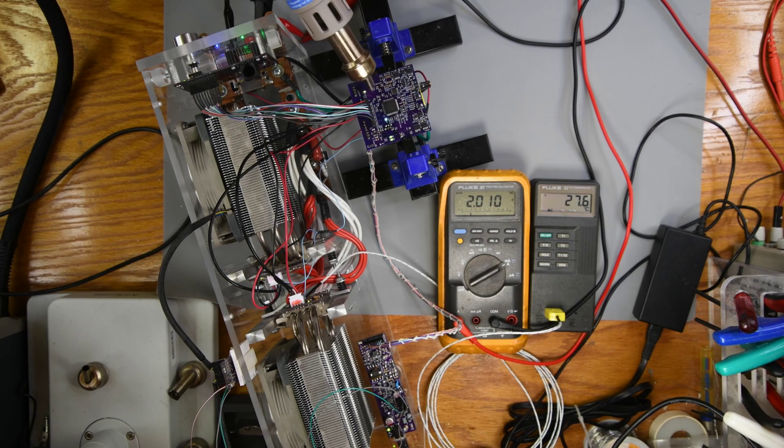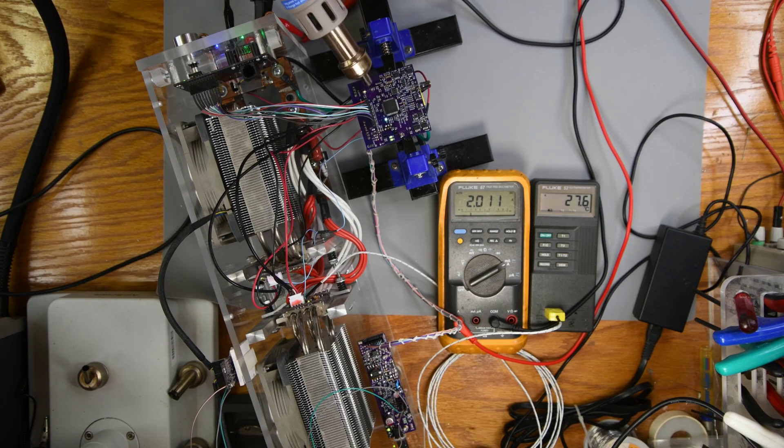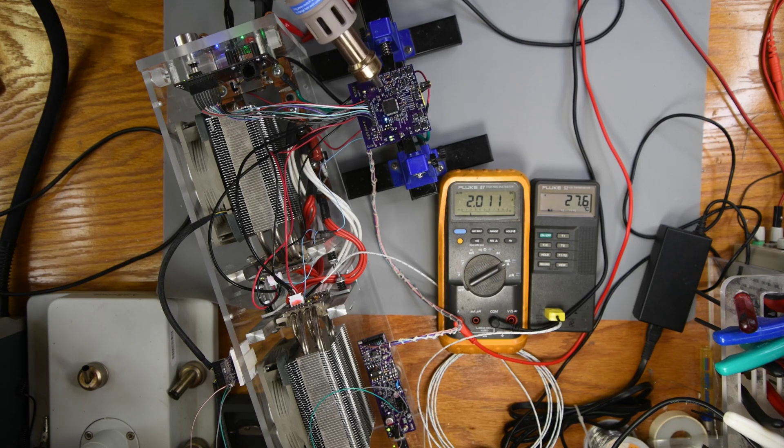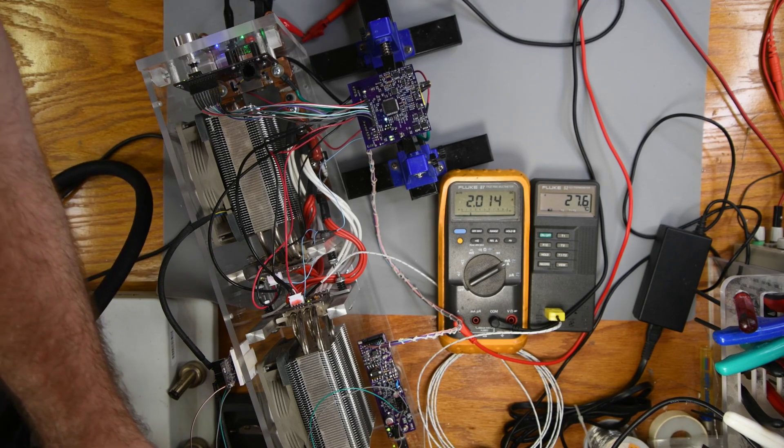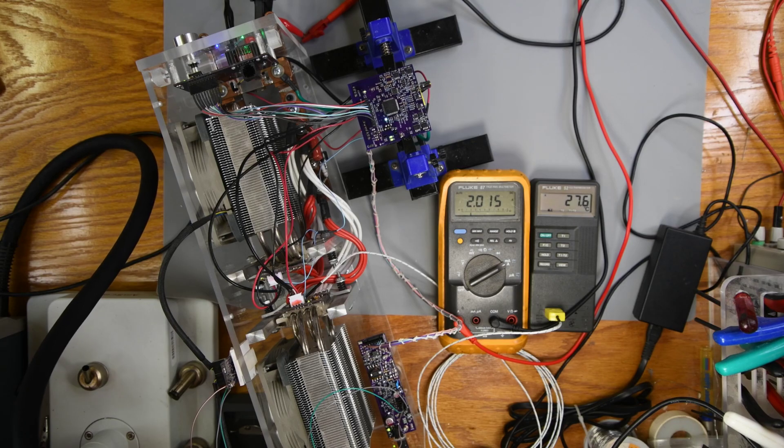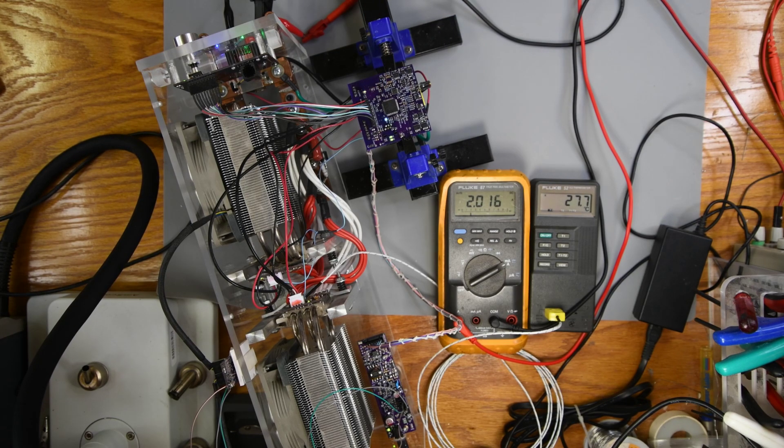This is the 3.3 volt regulator area. I've got the air running at 400 degrees Fahrenheit, so it doesn't take long to heat an area up. I would expect this to be the most sensitive. The output of the 3.3 volt regulator directly affects the output of the DAC. Well, that is a very good regulator. That's almost no drift at all. That is much better than I was expecting.